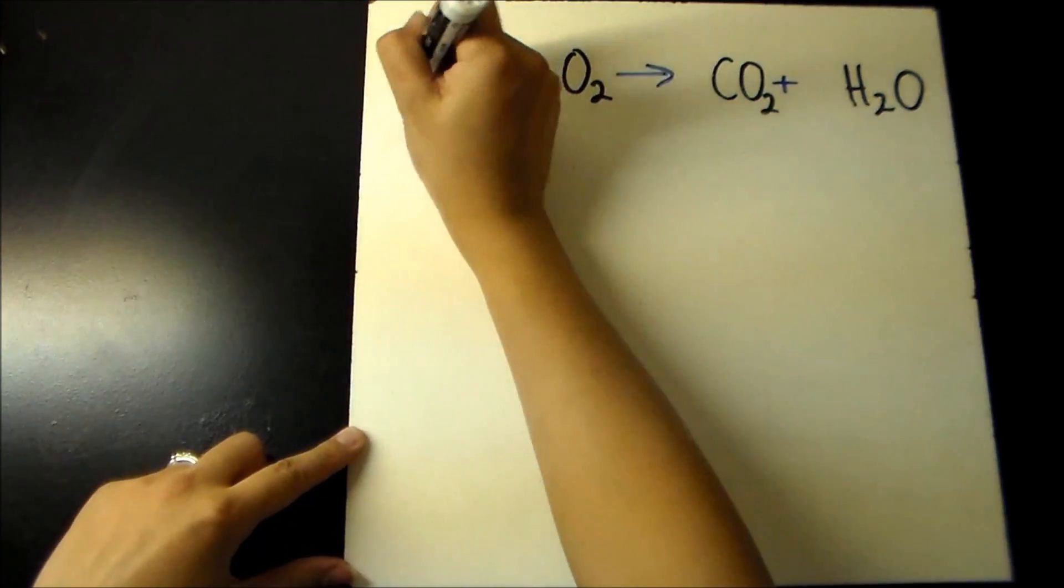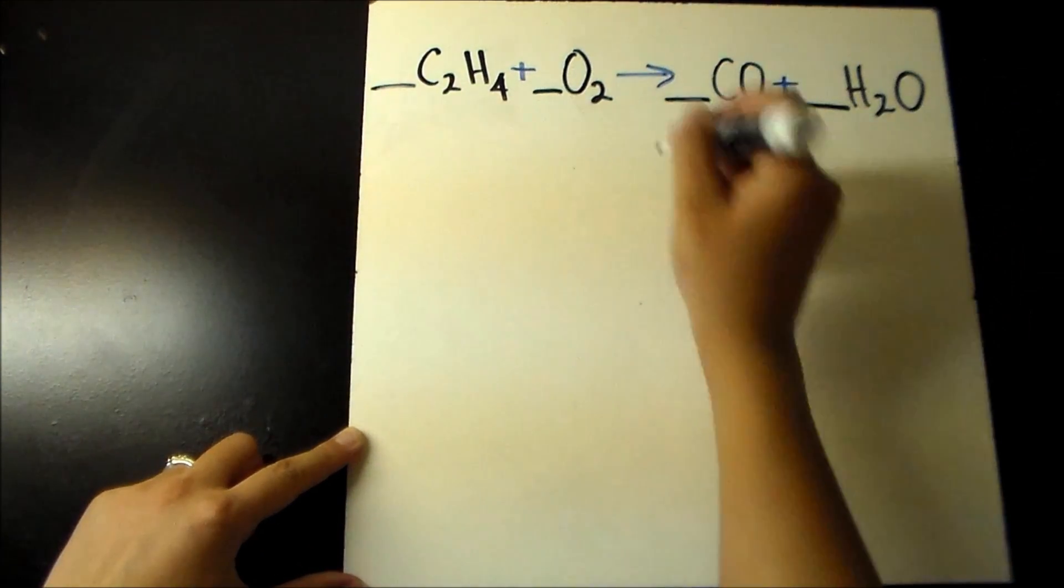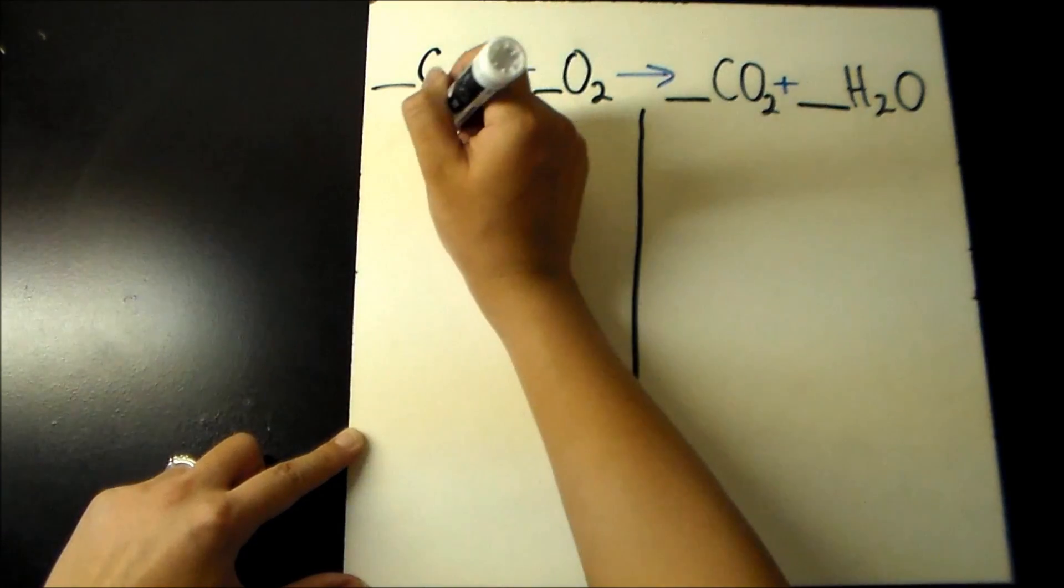Draw a line before each compound. This is where coefficients will be added. Underneath the reaction arrow, draw a vertical line to separate the reactants from the products.